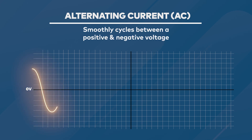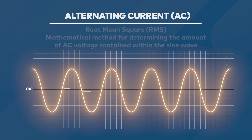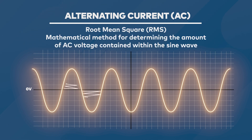Alternating current, however, provides a sine wave of energy that cycles between positive and negative voltages many times per second. When measuring alternating current, you must determine the amount of area enclosed within the positive and negative halves. A mathematical formula known as root-mean-square, or RMS, is used to determine this. Therefore, you will see most AC voltage readings indicated with the RMS designation.